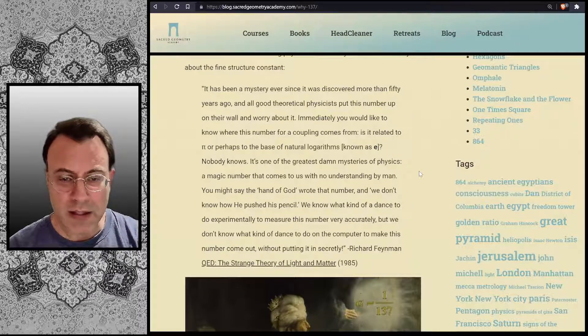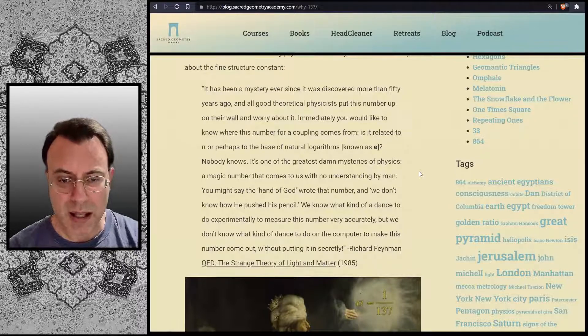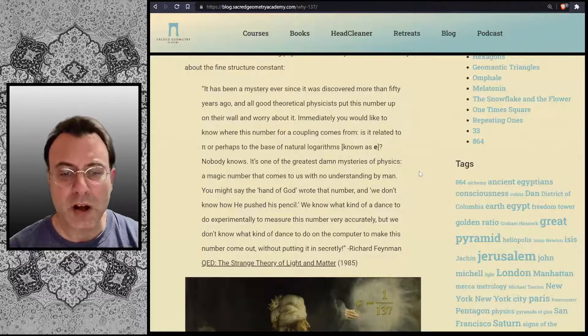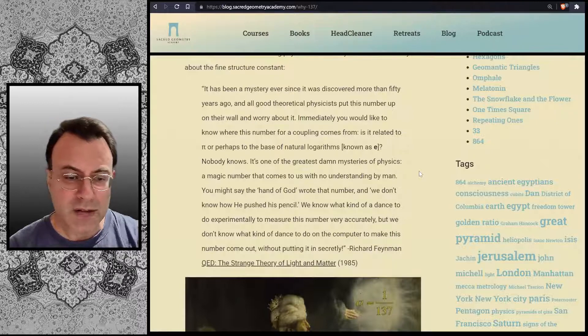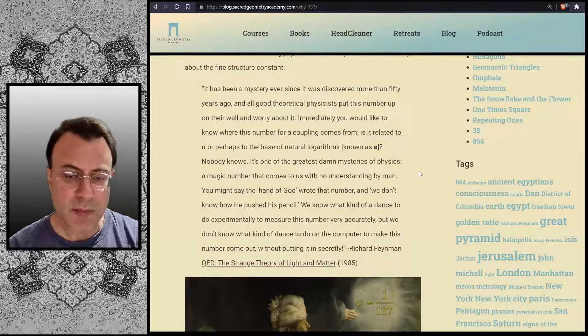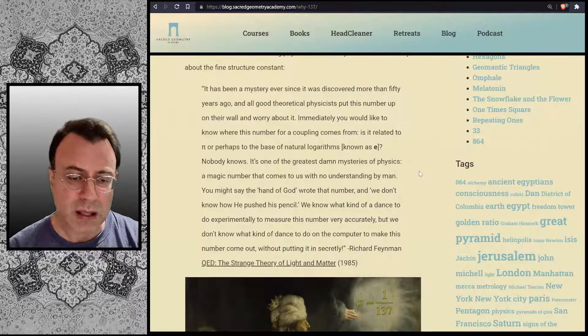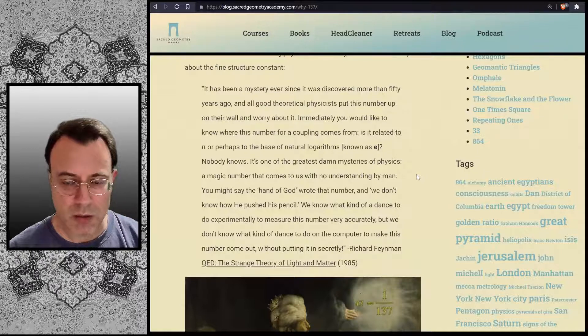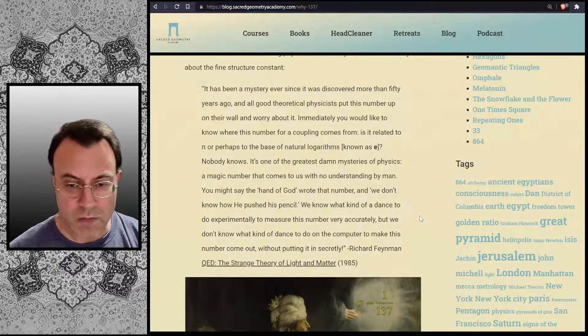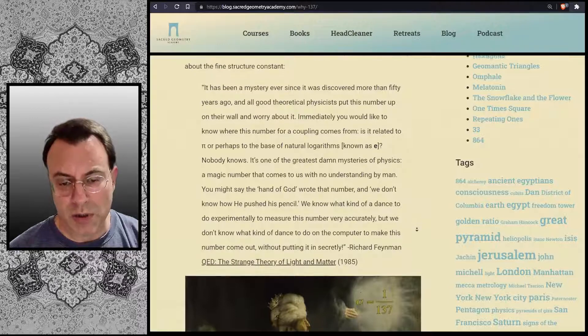"It's one of the greatest damn mysteries of physics. A magic number that comes to us with no understanding by man. You might say the hand of God wrote that number, and we don't know how he pushed his pencil. We know what kind of a dance to do experimentally to measure this number very accurately, but we don't know what kind of a dance to do on the computer to make this number come out without putting it in secretly." Richard Feynman in QED: The Strange Theory of Light and Matter, published in 1985.